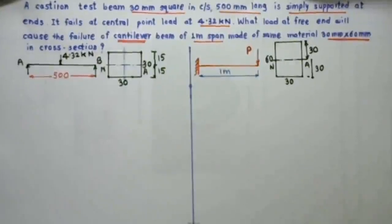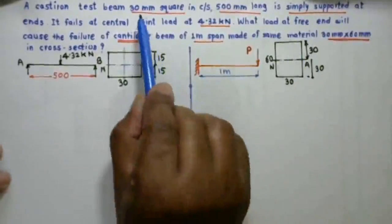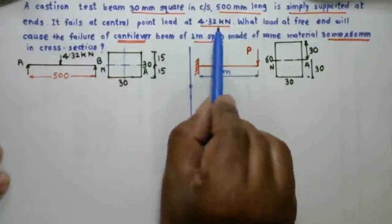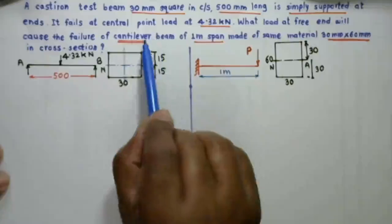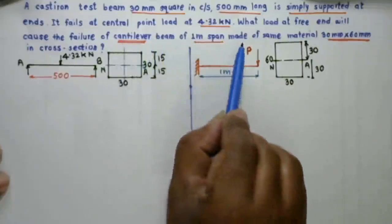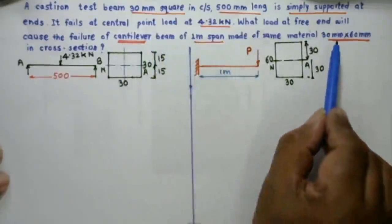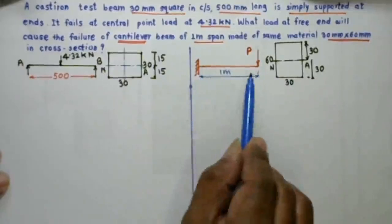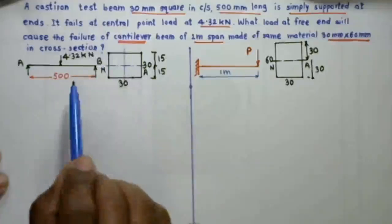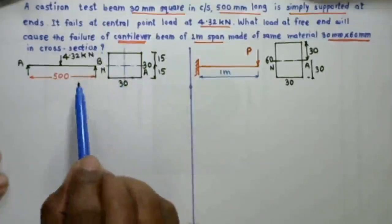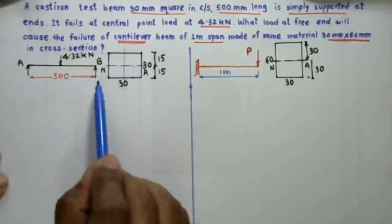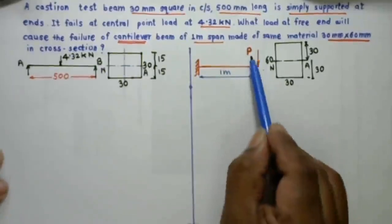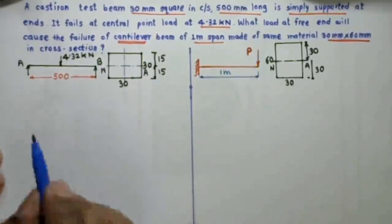In this numerical, a simply supported beam has a cross section of 30 mm by 30 mm, length 500 mm, and a point load of 4.32 kN acting centrally. In the second case, a cantilever beam of one meter span is made of material with cross section 30 mm by 60 mm. For case one we calculate the bending stress, and use that same bending stress in case two to find the load acting on the cantilever beam.